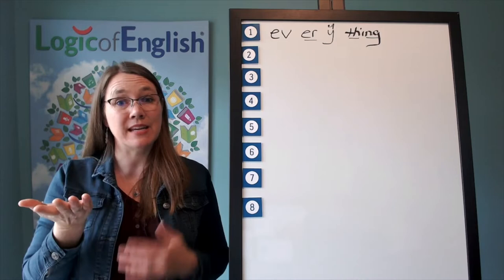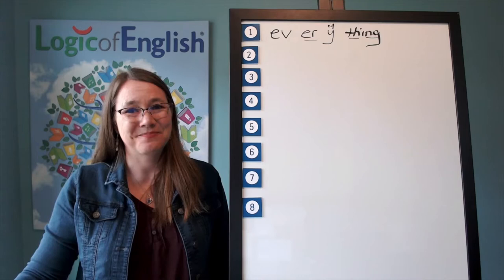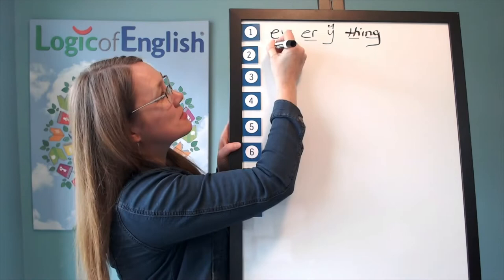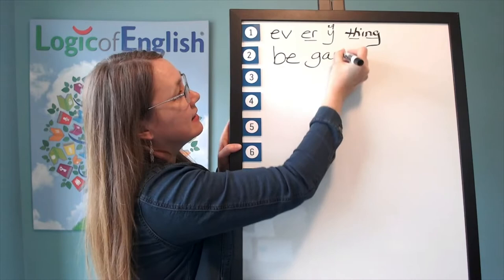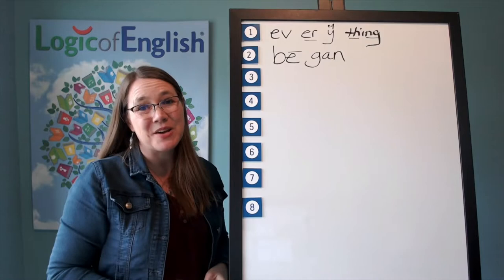Go ahead and write. Sound it out as you write it. Excellent. Now help me to write it. The first syllable is B, G-E. The second syllable is gan, G-A-N. And how will we mark it? We'll put a line over the E.